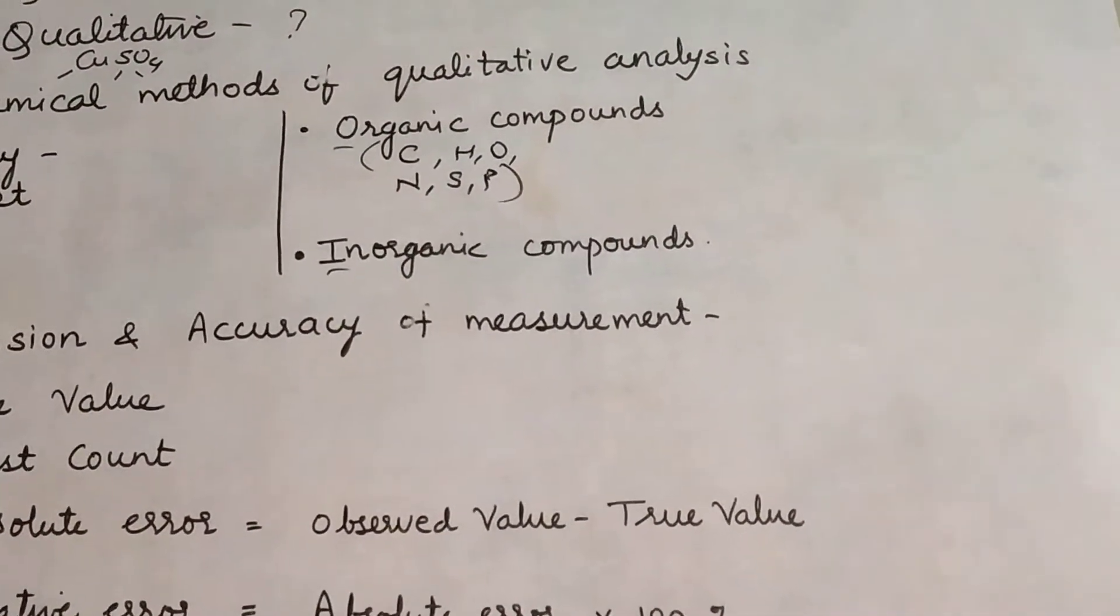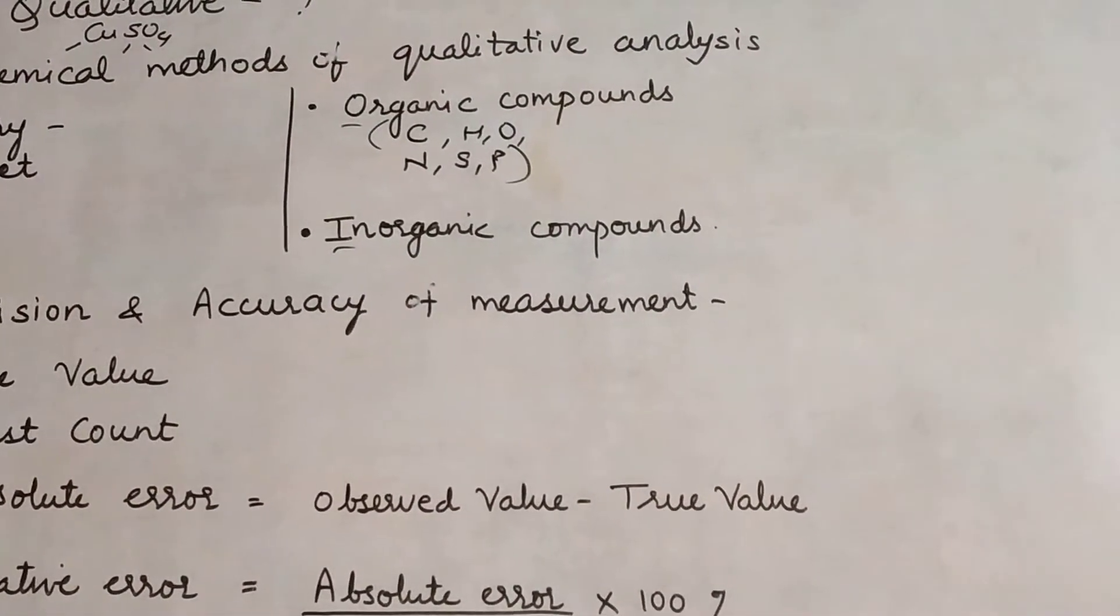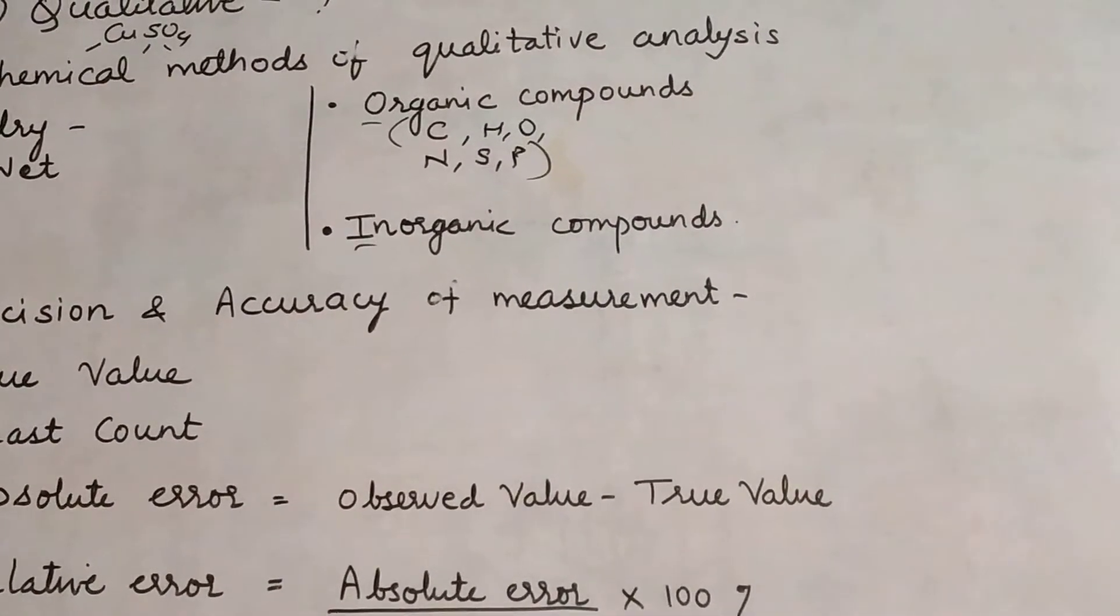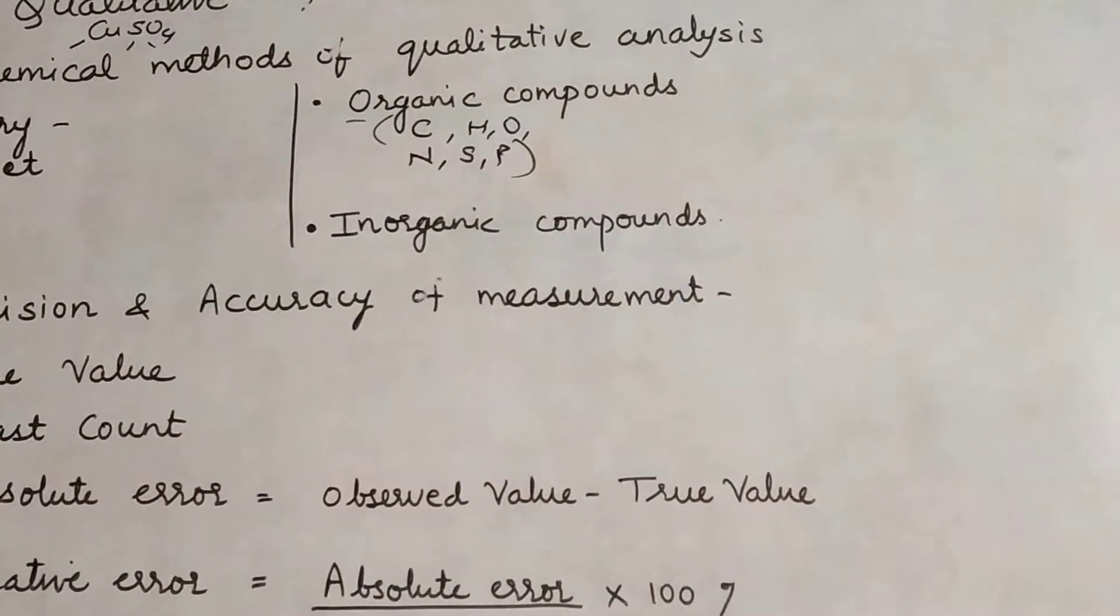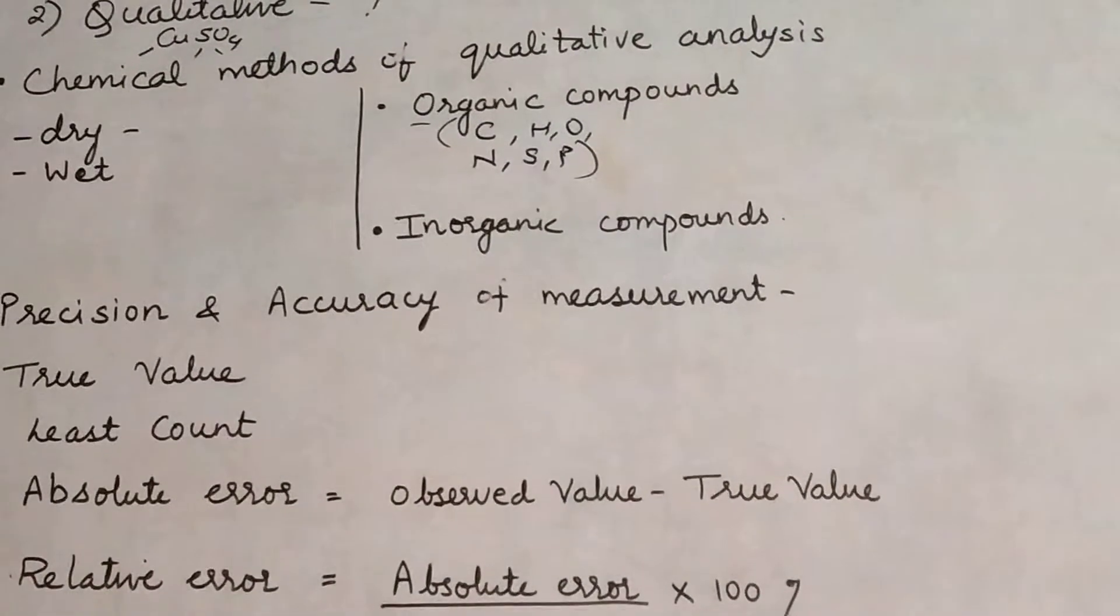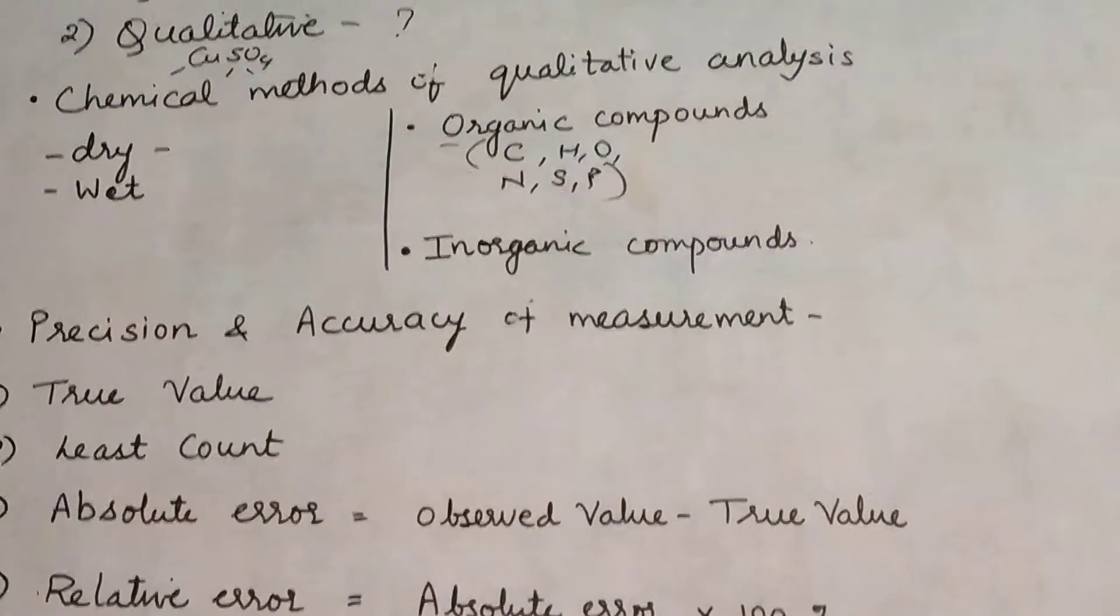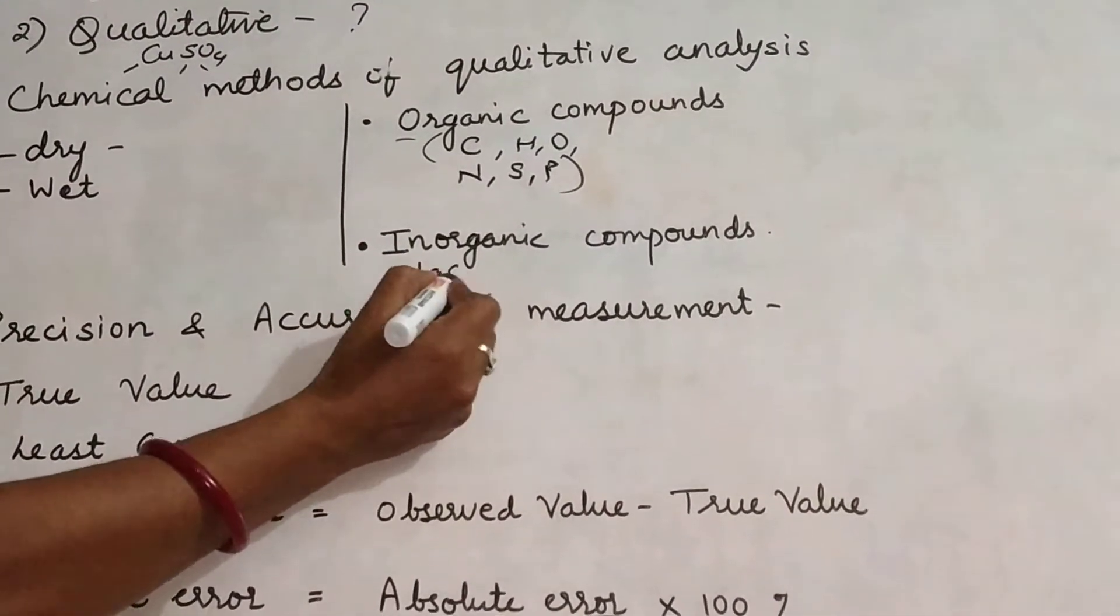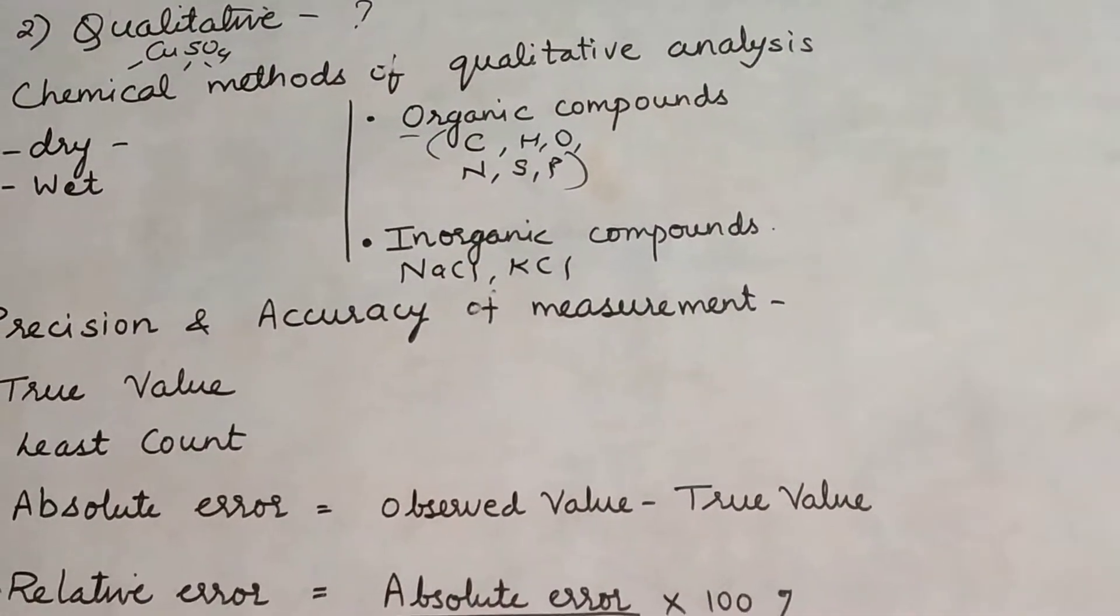In inorganic compounds we have metals and non-metals present. Carbon is usually absent in inorganic compounds. In some rare cases carbon may be present in inorganic compounds, but usually carbon atoms are absent. Like you can have examples of NaCl, KCl - these are inorganic compounds. MgSO4 - these are inorganic compounds.